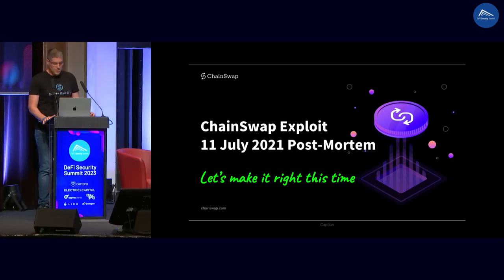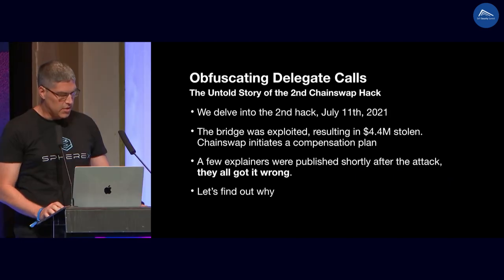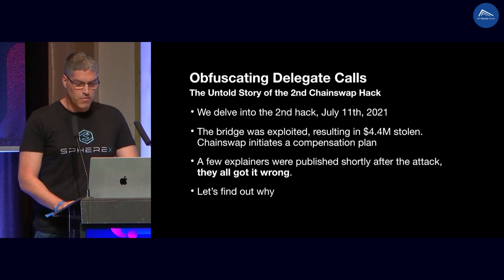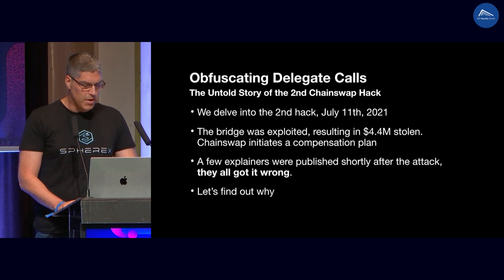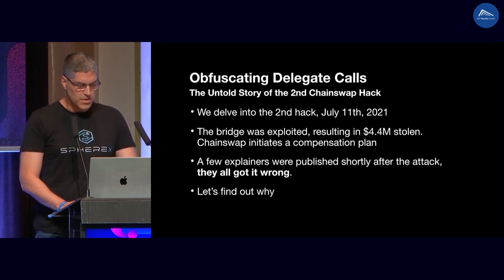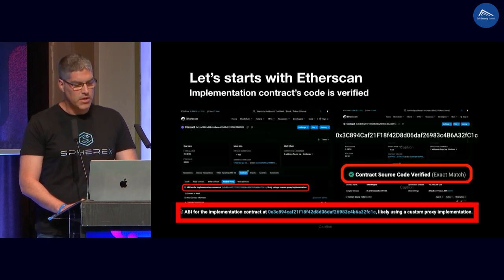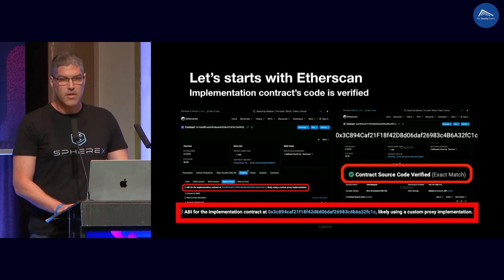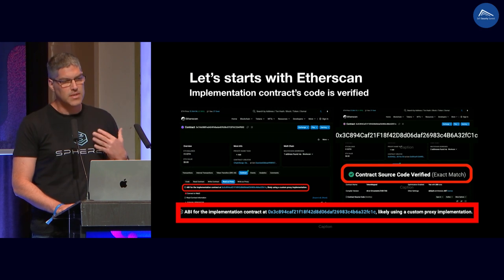ChainSwap was a cross-chain bridge active in 2021 up to late 2021. It was hacked twice in about a week — the first hack was $800K stolen and the second hack was $4.4 million. After the hack, a few explainers were published: some talked about sloppy authentication checks, some about something wrong in the increasing of quota — but they either got it wrong or didn't touch the real spot. The attacker's transaction in Etherscan interacts with ChainSwap's proxy, which directs to a verified contract — and we found an identical contract that was not only verified but also audited.